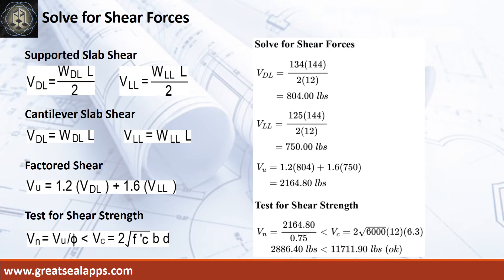The shear force for dead load is 804 pounds, and the shear force for live load is 750 pounds, for a maximum shear force of 2,164.8 pounds. The nominal shear force is 2,886.4 pounds, which is less than 11,711.9 pounds.